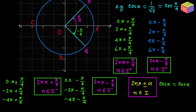In that case the general solution for x would be 2n times pi plus or minus alpha, where n is an integer. This was the geometric — or trigonometric — way of proving it from the unit circle diagram. Now we are also going to derive the same general solution using pure trigonometry.